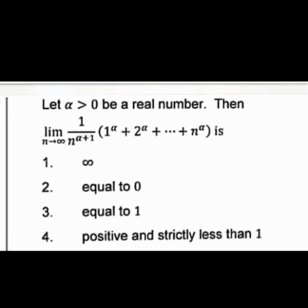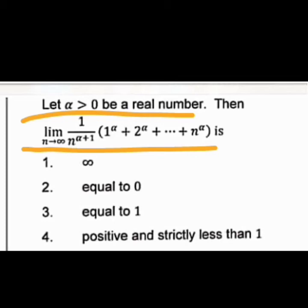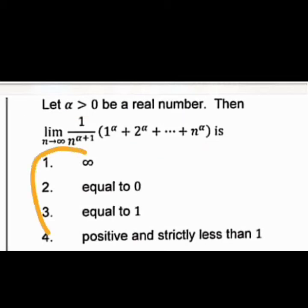Now for the last question of this video: for α > 0 a real number, find the limit as n → ∞ of (1/n^(α+1)) × (1^α + 2^α + ... + n^α). We need to determine what value this limit approaches.